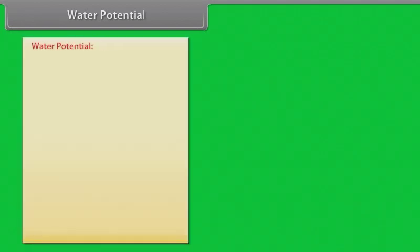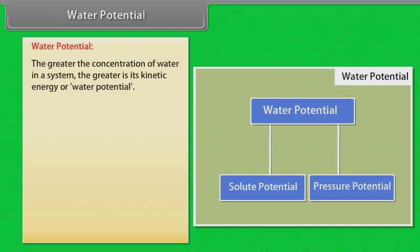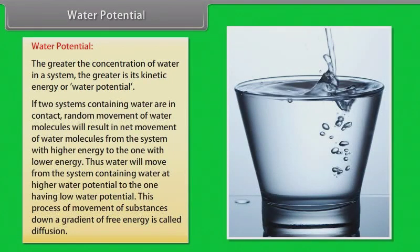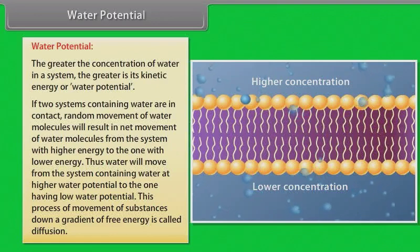To comprehend water–plant relations, we need to know certain standard terms. Water potential is a concept fundamental to understanding water movement. Solute potential and pressure potential are the two main components that determine water potential. Water molecules possess kinetic energy; the greater the concentration of water in a system, the greater is its kinetic energy or water potential. Hence, pure water will have the greatest water potential. If two systems containing water are in contact, random movement of water molecules will result in net movement from the system with higher water potential to the one with lower water potential. This process of movement of substances down a gradient of free energy is called diffusion.